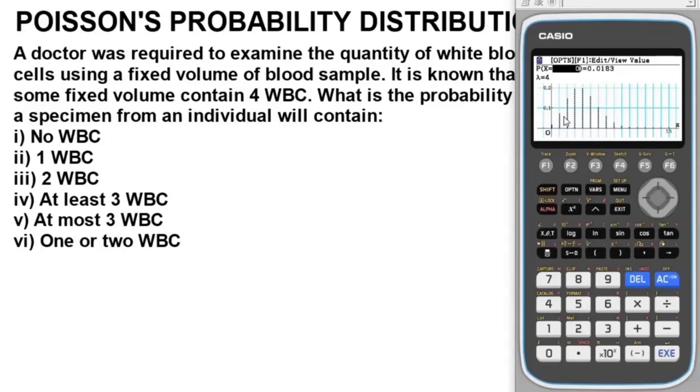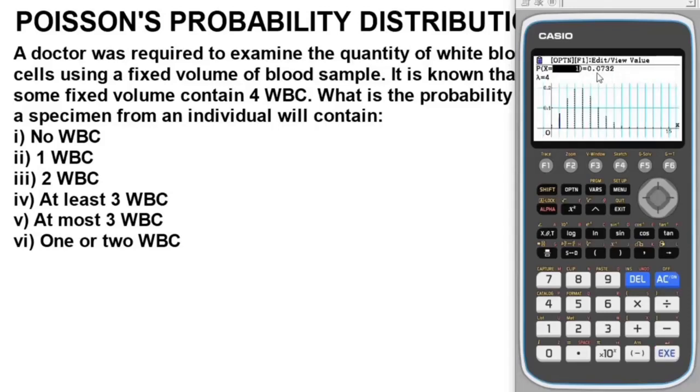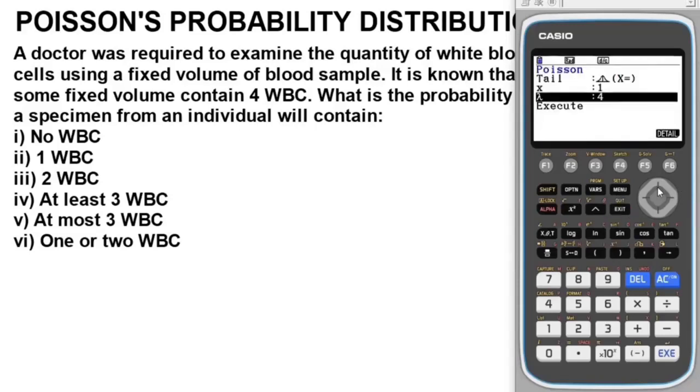This is the probability that a specimen from an individual contains one white blood cell. We go back and change x to 1. We have the probability to be 0.0732.